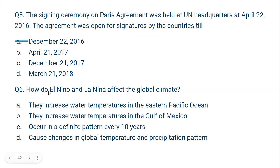Question number six: How do El Niño and La Niña affect the global climate? We know that El Niño and La Niña affect global temperature and rainfall patterns. The correct answer is option D: they cause changes in global temperature and rainfall patterns. This is their main contribution.